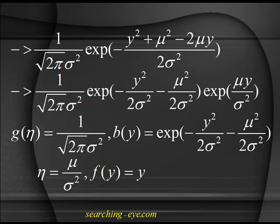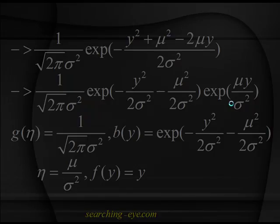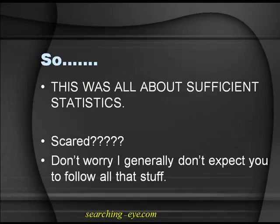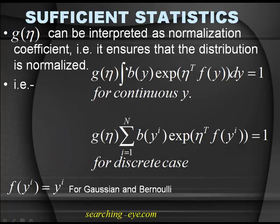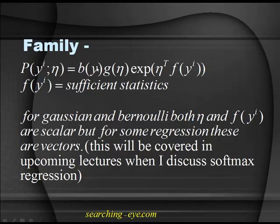So: one over root(2π σ²) times exponential of (−y² + ...) — just expand this quadratic term. You will get one over root(2π σ²) times exponential of this expression. Separating terms, you can now compare with the exponential family distribution: b(y) · g(η) · exponential(η^T f(y)).